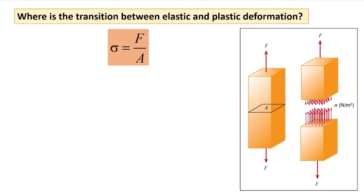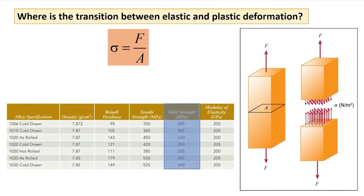Experiments can be run to determine what stress is needed to plastically deform a material. This stress is called the yield stress or yield strength of a material — you can look it up on the web or in any materials science book. For many materials, anything below the yield strength will produce elastic deformation, and anything above will produce plastic deformation.